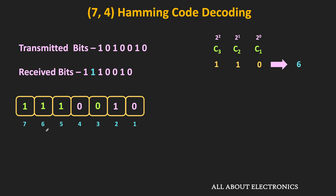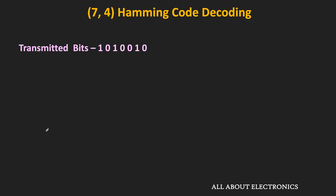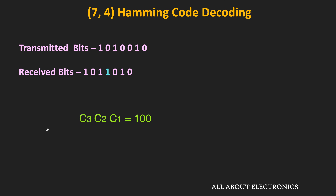By inverting that bit, we can correct the error. That is how a single-bit error can be corrected using this Hamming code. Similarly, if there is a single-bit error in any of the parity bits rather than the data bits, it can also be corrected. For example, for the same transmitted bits, if there is an error in parity bit P3 in the received code, following the same procedure, the check bits C3, C2, C1 will be 1, 0, 0, which indicates an error in the 4th bit position.